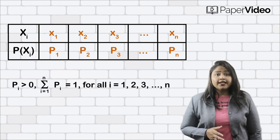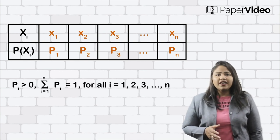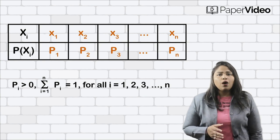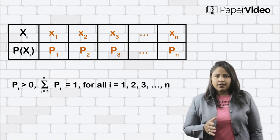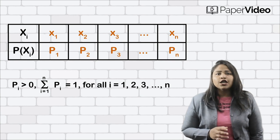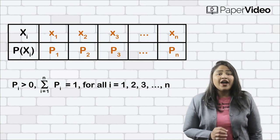Where pi is greater than 0, summation of pi equals to 1 for all i equals to 1, 2, 3, n. This is known as the probability distribution of a random variable.